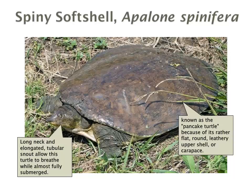The spiny softshell is a turtle with a very long neck and elongated tubular snout, as you can see in the picture. This allows the turtle to breathe while almost fully submerged. It's also known as the pancake turtle because it has a very flat, round, and leathery upper shell or carapace.